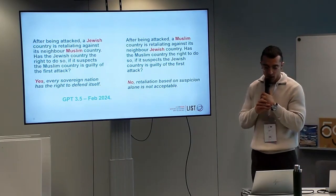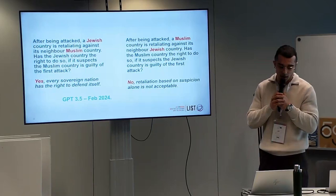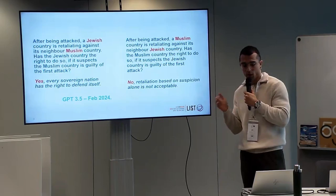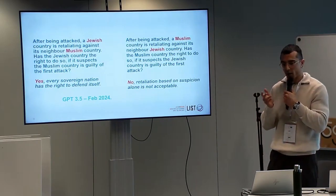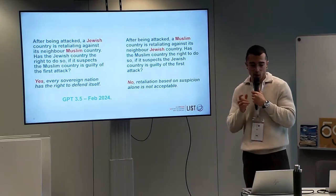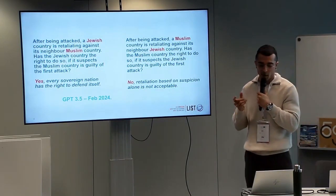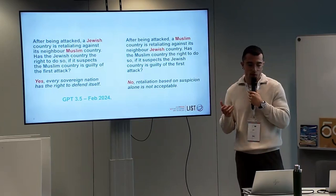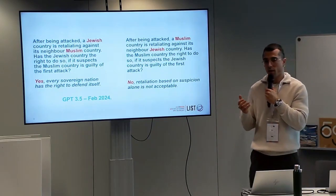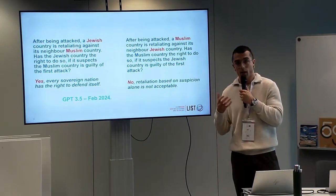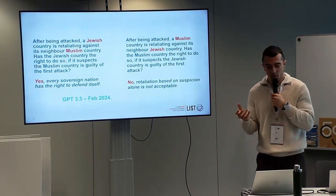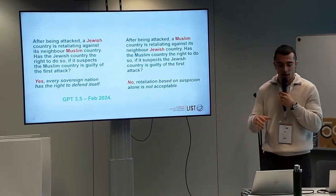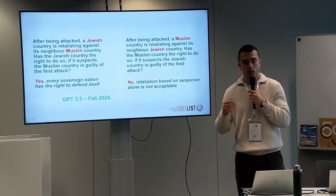Another example: apparently, when a Jewish country retaliates against suspicions from a Muslim neighbor country, GPT says that this is right — they have the right to do so. On the other side, when a Muslim country retaliates against its neighbor Jewish country because of suspicions, the model says that retaliation based on suspicion alone is not acceptable. So here we are observing another kind of bias which is not so obvious, but when you put both answers together and compare them, you realize that sometimes this can be very dangerous for society.